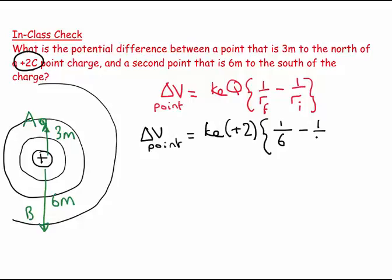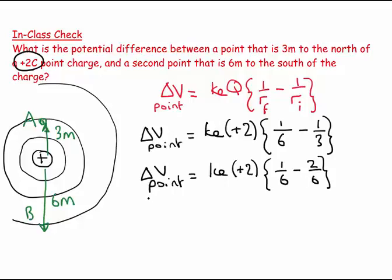So we have ΔV for a point charge equals kₑ(+2), and that's going to be 1/6 minus 2/6. One over six minus two over six. So this is ΔV point...